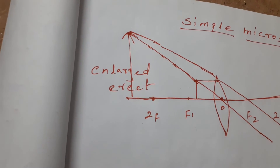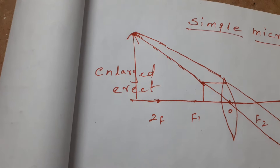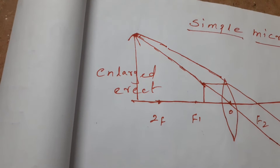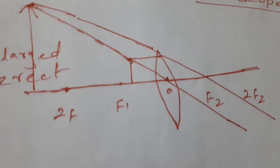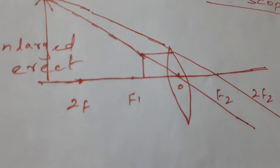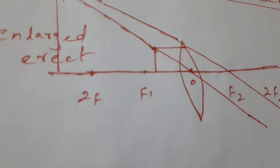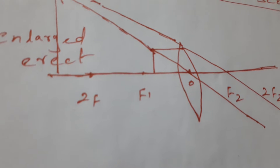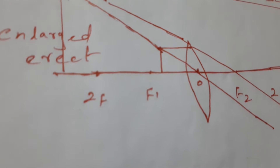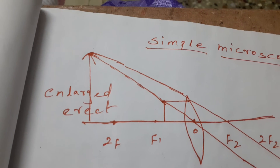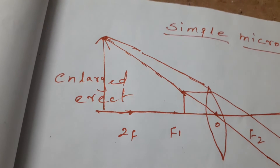You get an enlarged, erect image — this is the simple microscope. It is a simple convex lens. A short focal length of the convex lens makes the image magnified. This is the simple microscope ray diagram. A simple microscope is a convex lens of short focal length held near the eye to get an enlarged view of a small object. If you keep the object in front of the focus, that is in between the optic center and focal point, you will get an enlarged, erect, virtual image on the same side.